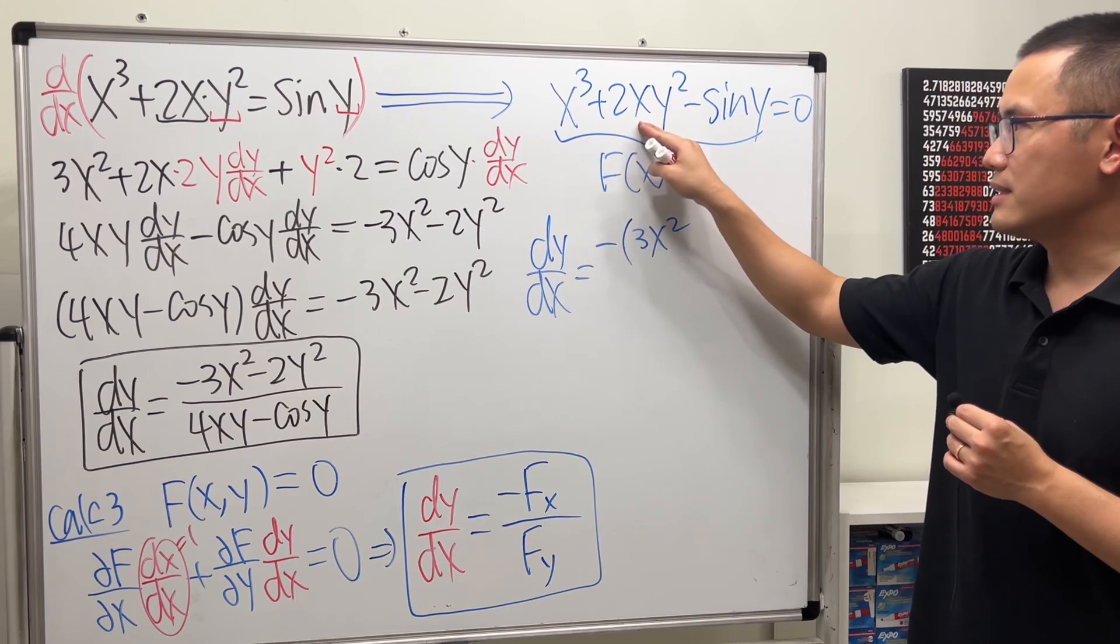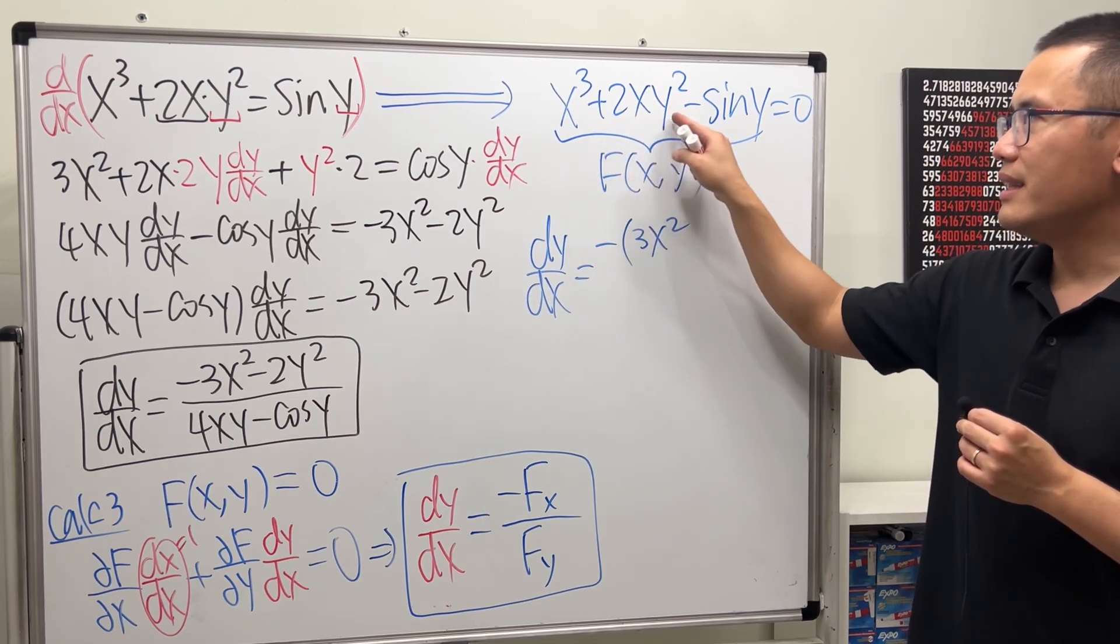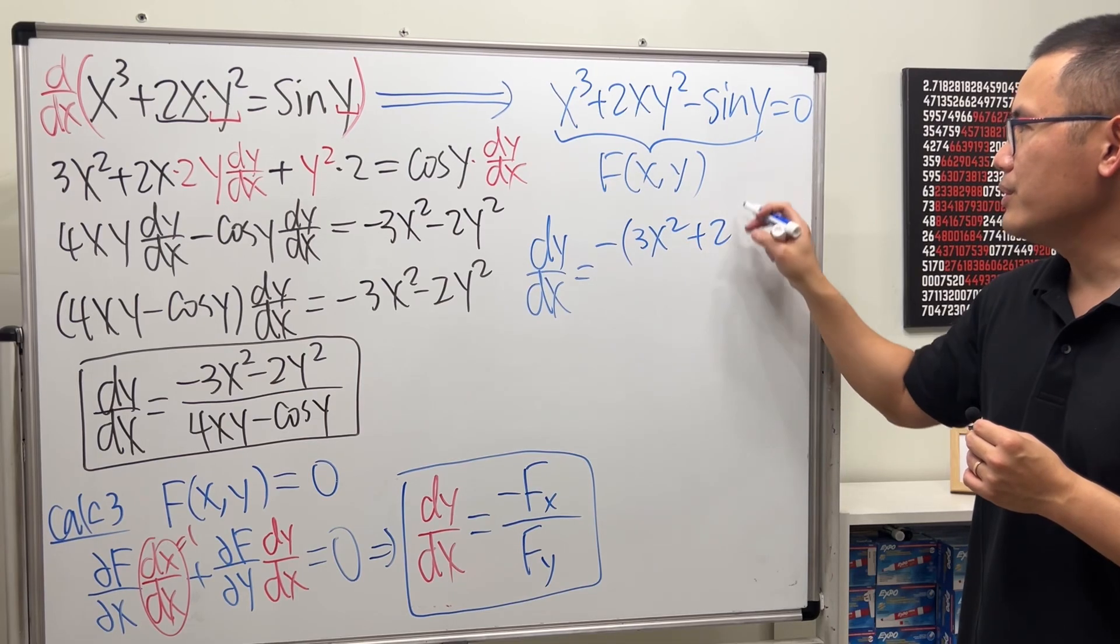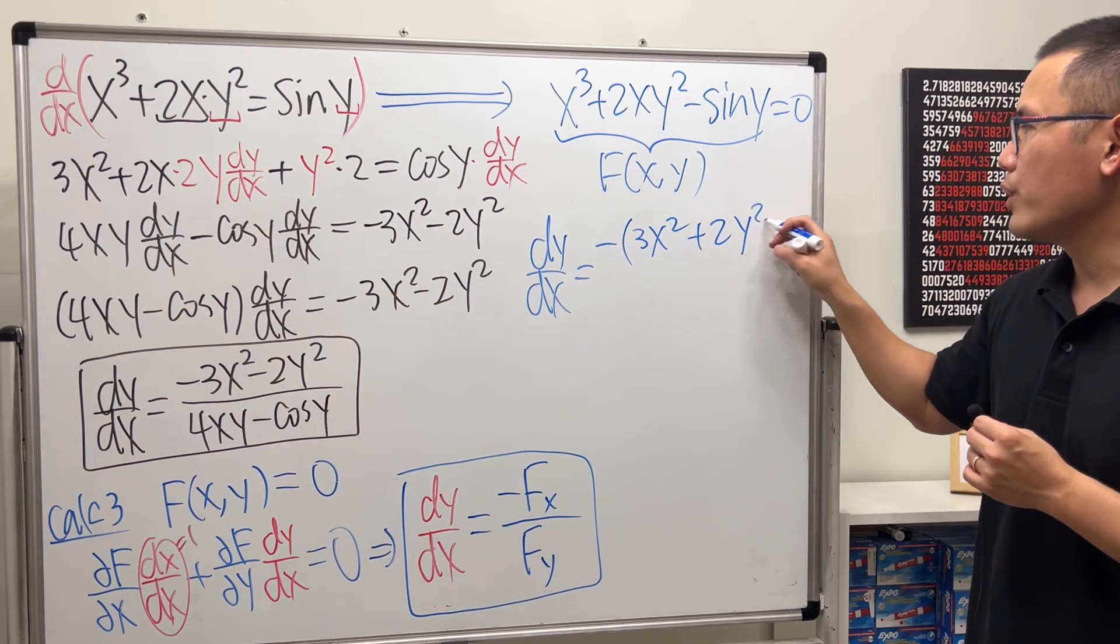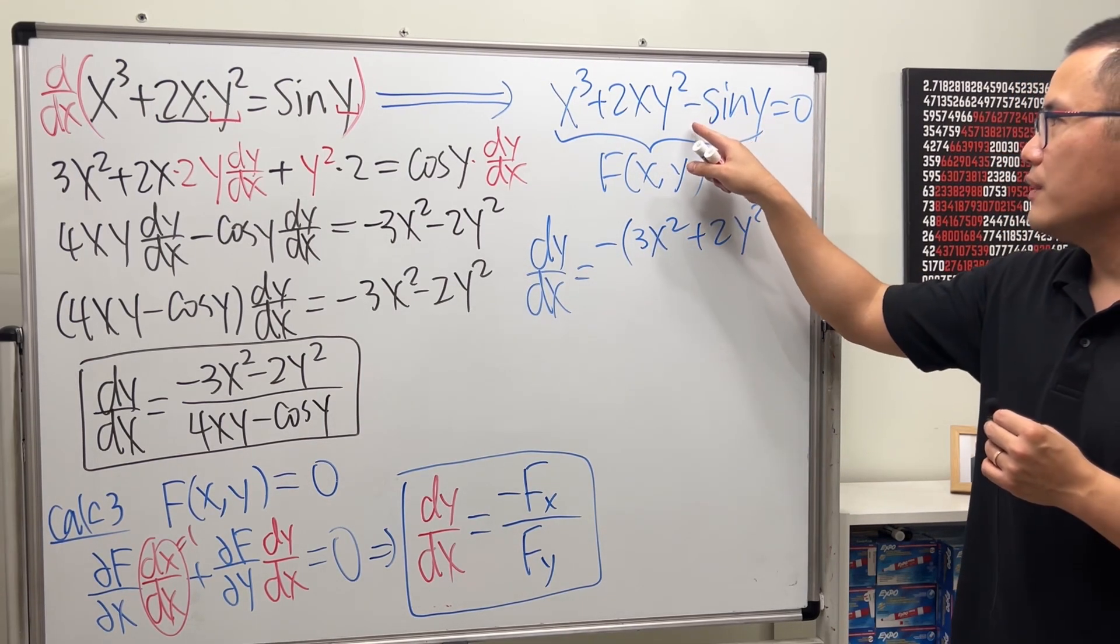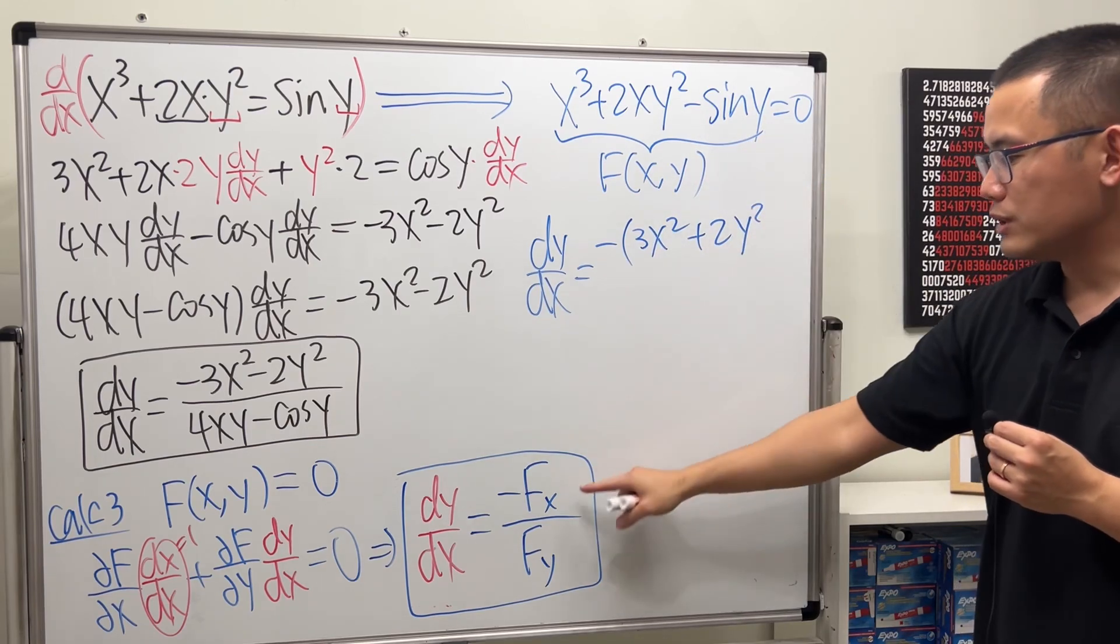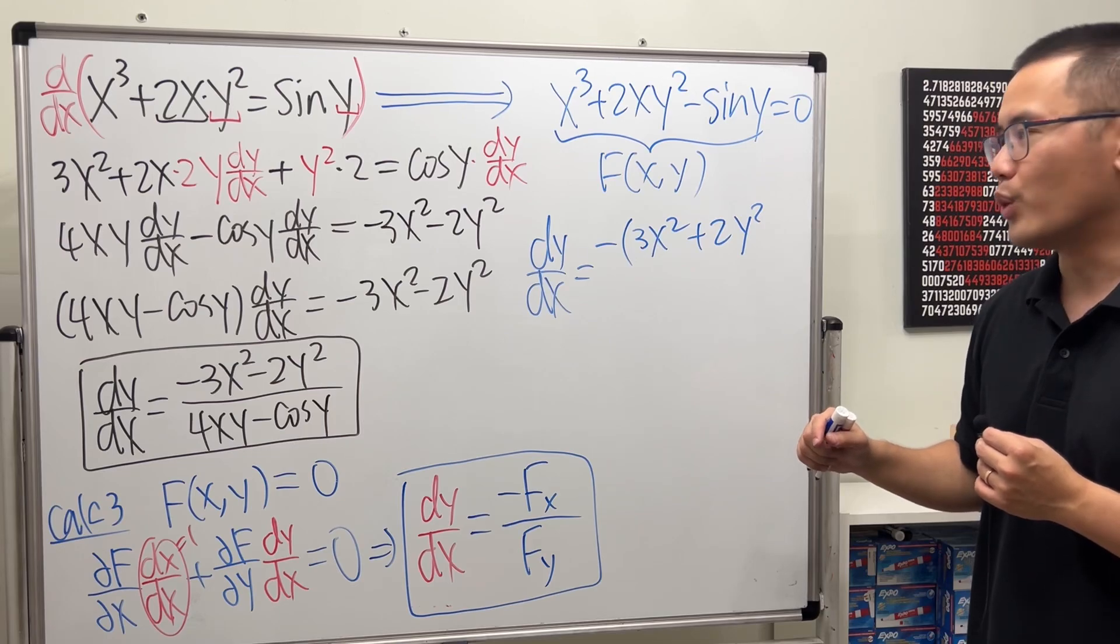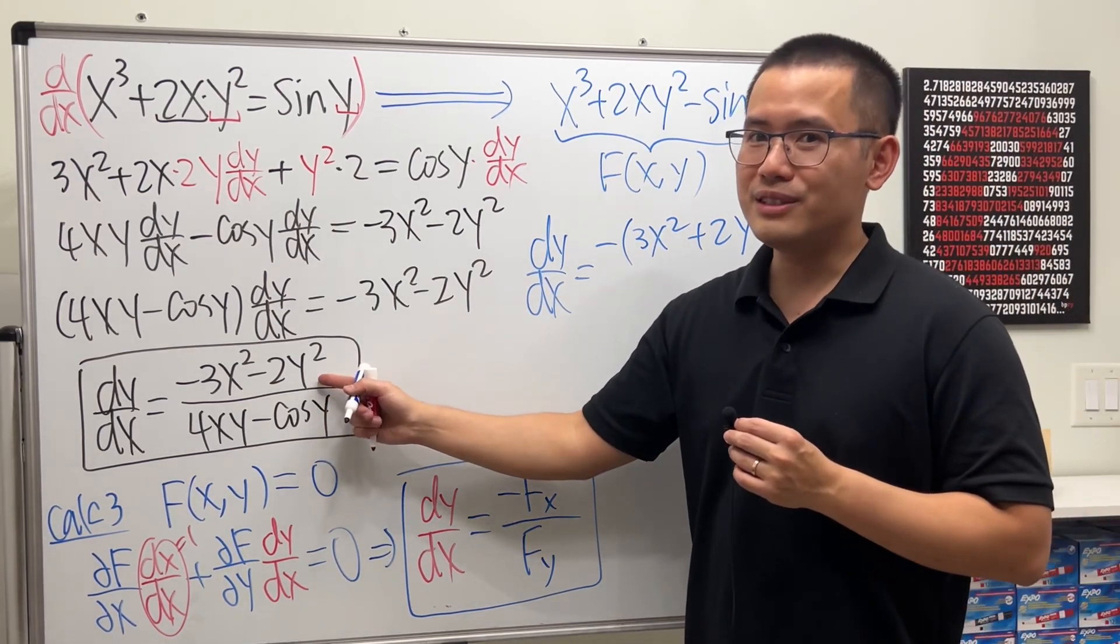Derivative of 2x is just 2, and then this right here is just a constant, so let's multiply it. So we have plus 2, and then y squared. The derivative of negative sine y with respect to x is just going to be 0, because y is just like a constant in the x world. That matches.